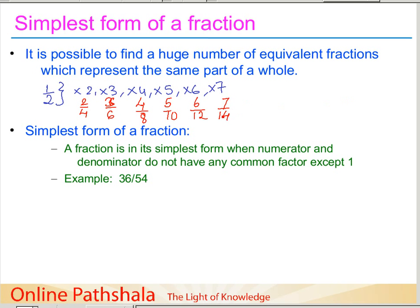How do we know that we have the basic fraction from which all others can be generated by multiplying? Looking at 1/2, both the numerator and denominator — 1 and 2 — do not have any common factor except 1. Whereas in the other fractions we can divide both numerator and denominator by 2. So a fraction is in its simplest form when the numerator and denominator do not have any common factor except one.